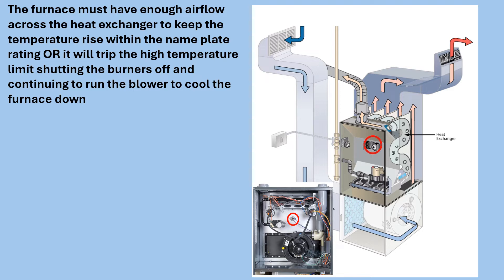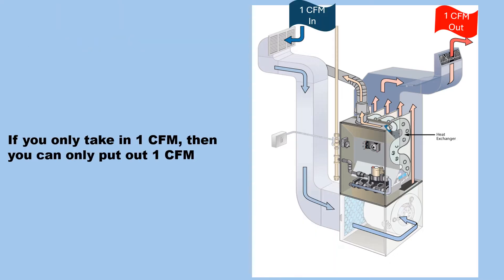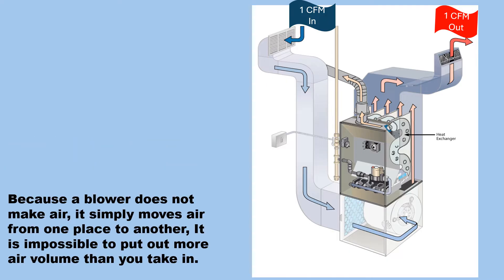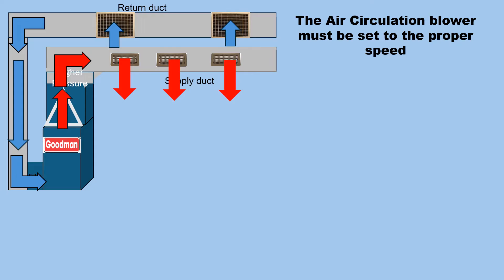The furnace must have enough airflow across the heat exchanger to keep the temperature rise within the nameplate rating, or it will trip the high temperature limit, shutting the burners off and continuing to run the blower to cool the furnace down. If you only take in one CFM, then you can only put out one CFM, because a blower does not make air — it simply moves air from one place to another. It is impossible to put out more air volume than you take in. The air circulation blower must be set to the proper speed.